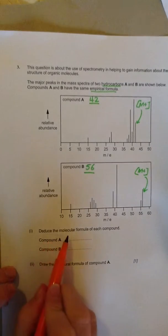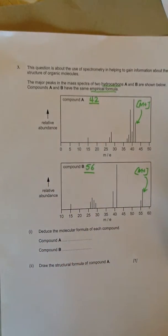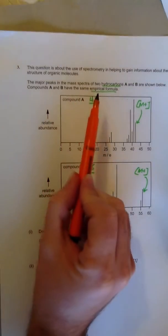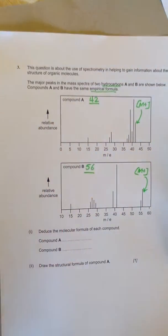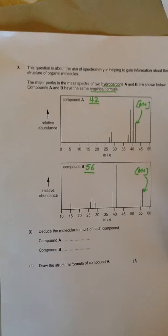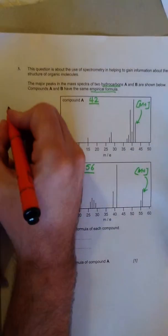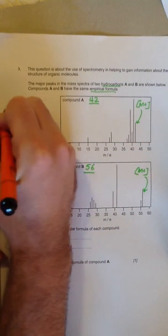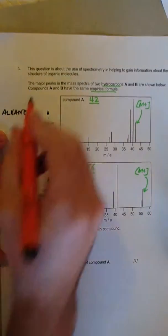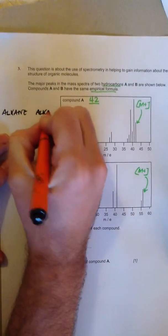And then we need to deduce the molecular formula of each compound. So how do I know what type of compound it is? Well, we underline the word hydrocarbon, so it only concerns the elements hydrogen and carbon. So it could conceivably be either an alkane or it could be an alkene.